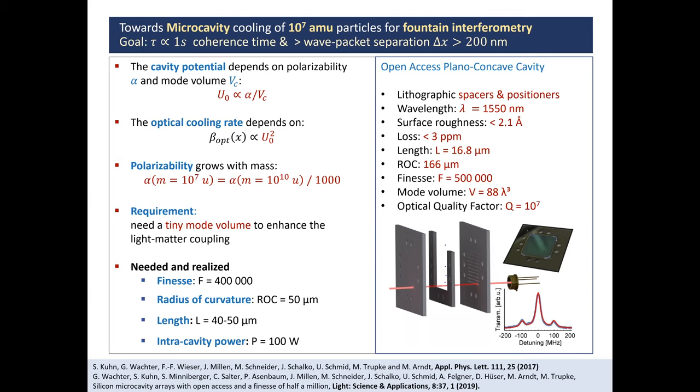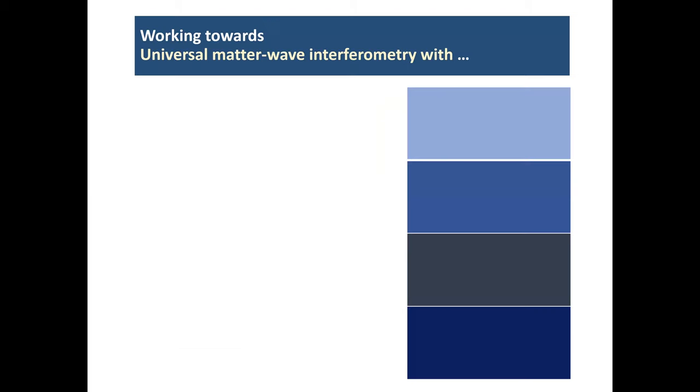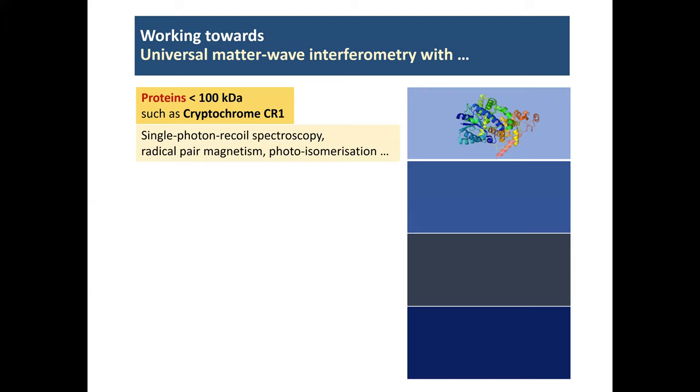So, with that, short summary. So, we call, what we're doing, universal matter wave interferometry, because it should really expose all these different things to quantum superposition experiments. Atoms, tailored macromolecules, biomolecules, clusters of atoms and molecules, dielectric nanoparticles. Students, not yet. And the applications of that are very diverse. As diverse as the particles are, there are kind of quantum biological questions that you may address with cryptochrome, which is a protein, more than 100,000 atomic mass units,